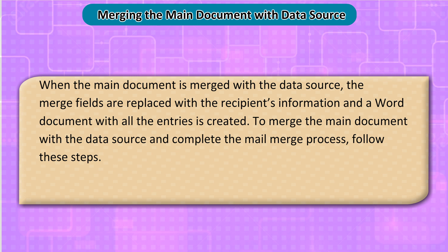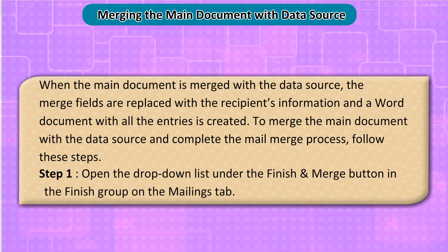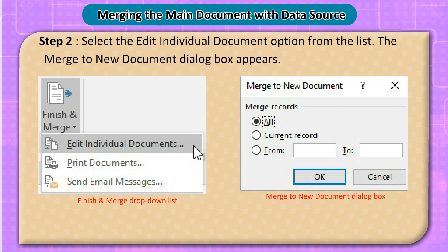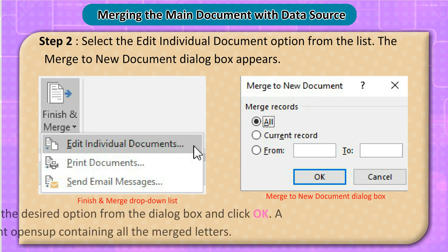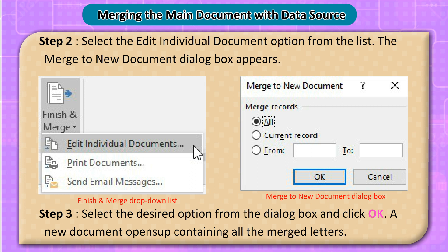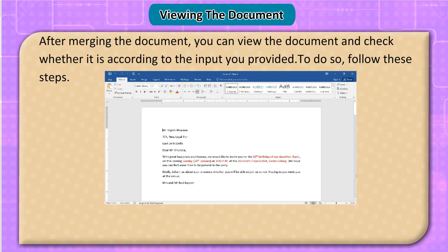Merging the main document with the data source: when the main document is merged with the data source, the merge fields are replaced with the recipients' information and a Word document with all the entries is created. To merge the main document with the data source and complete the mail merge process, follow these steps. Step 1: open the drop-down list under the Finish and Merge button in the Finish group on the Mailings tab. Step 2: select the Edit Individual Documents option. The Merge to New Document dialog box appears. Step 3: select the desired option and click OK. A new document opens containing all the merged letters.